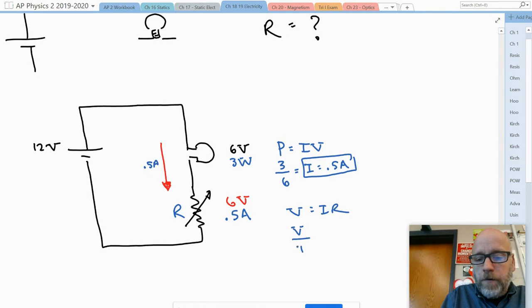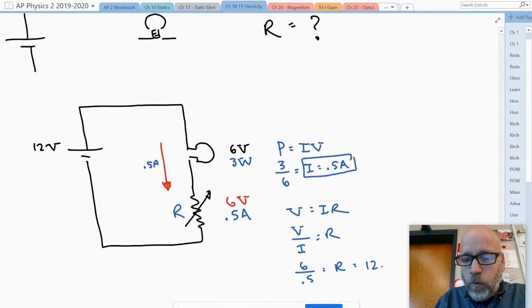I'm going to have my six volts divided by 0.5 amps, is going to give me 12 ohms.